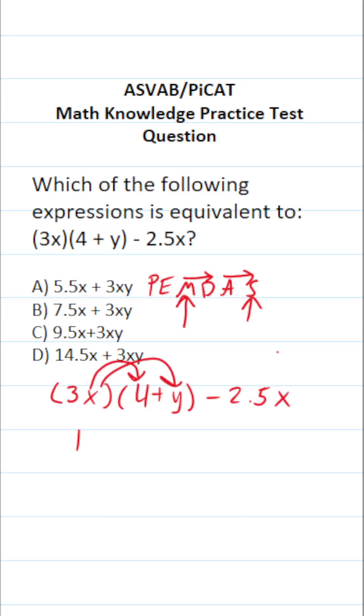3x times 4 becomes 12x. 3x times y becomes plus 3xy minus 2.5x.